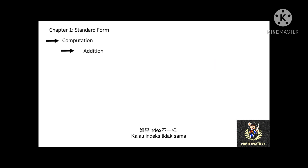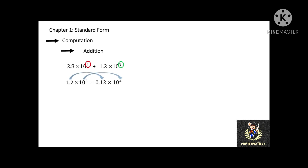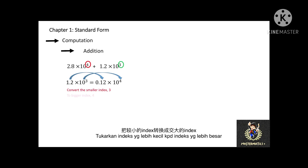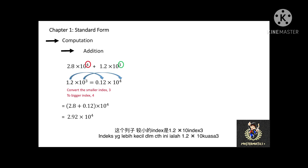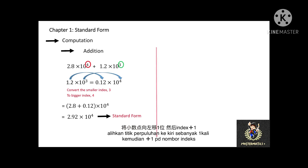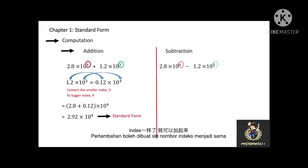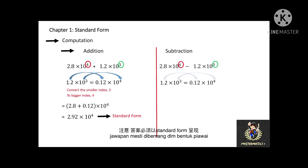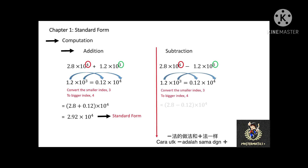When the index numbers are different, for example 2.8 × 10⁴ + 1.2 × 10³, first pick the standard form with the smaller index and convert it to the larger index. So 1.2 × 10³ becomes 0.12 × 10⁴. Now both have the same index, so add 2.8 and 0.12 to get 2.92 × 10⁴. Make sure your final answer is in standard form. This method is also applicable for subtraction.